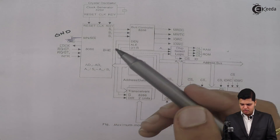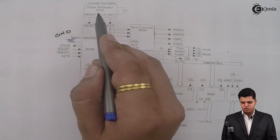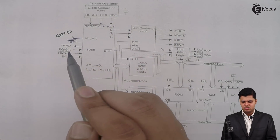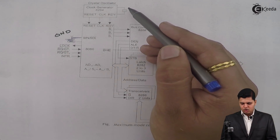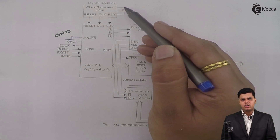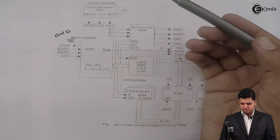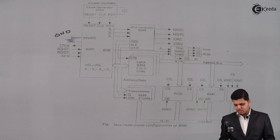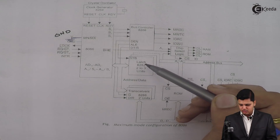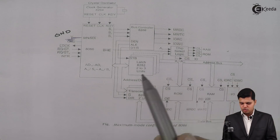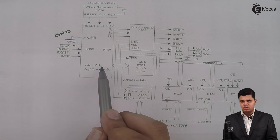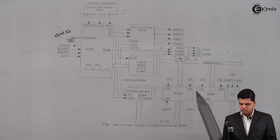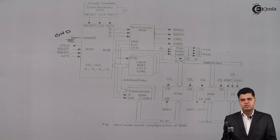Apart from that, the same clock generator is used for providing the reset signal, clock signal, and ready signal, and the clock generator is being provided with an external crystal oscillator. The next thing is the 8282 latch, which is used for latching the address given by the 8086 microprocessor so that it can be forwarded to the respective memories through the external address bus.